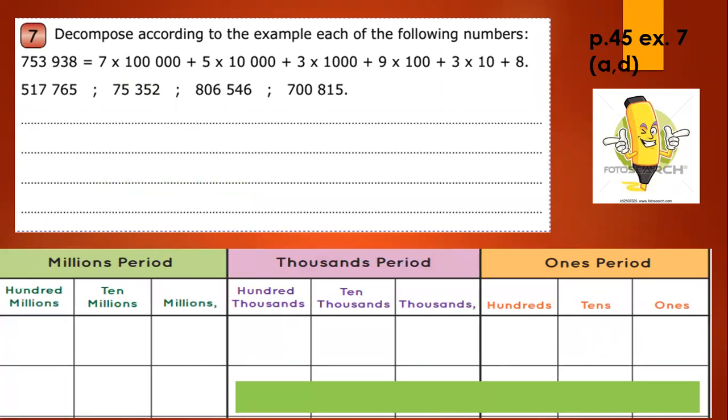Ones it means times 1, 10, this is 10, 100 times 100, 1,000 times 1,000, 10,000, here, 100,000, million, 10,000, and 100,000.